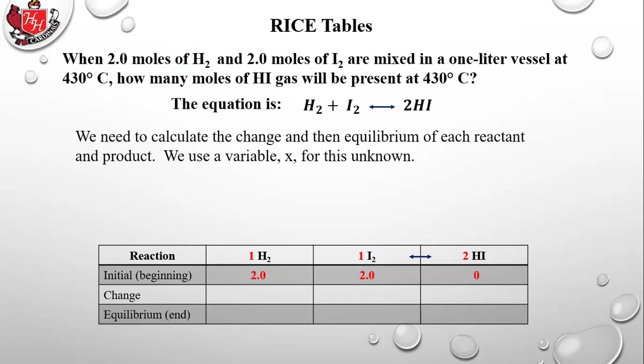We need to calculate the change and then the equilibrium of each reactant and product. We use a variable X for this unknown — we don't know how much it's changing. We're going to say that some unknown amount X is going to be used up of the H2, so it's negative 1X. You use whatever the coefficient is in front of the reactant — it becomes negative because you're using it up.